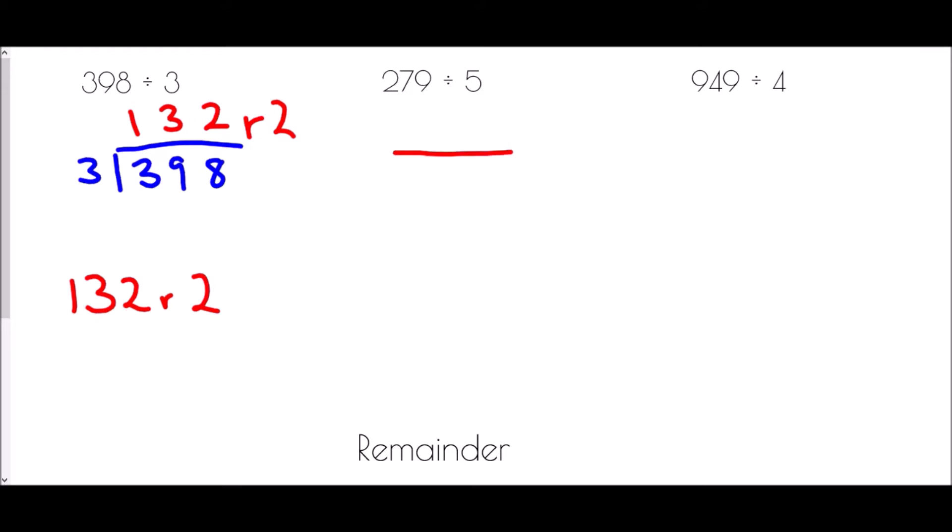279 divided by 5, well if I put my number underneath and my divisor at the front. How many times does 5 go into 2? Well it doesn't, so we carry the 2. How many 5s go into 27? It is 5 to make 25 but 2 left over. How many 5s go into 29? Well it's 5 again but again we have 4 left over, and so we have remainder 4. We have 55 remainder 4 as our answer.